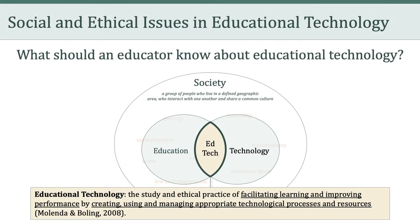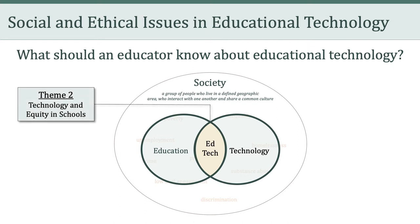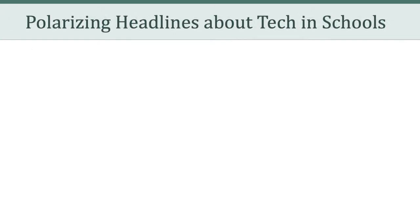Last week, we focused in on educational technology. We looked at the definition of edtech, and we also talked about how schools use technology — five areas of potential impact — as well as the various rationales for investing in educational technology. Now, this week, we're going to broaden our perspective slightly to really look at the relationship between education and technology. And this will be our introduction to theme number two: technology and equity in schools. I want to highlight a tension that exists when it comes to the relationship between education and technology.